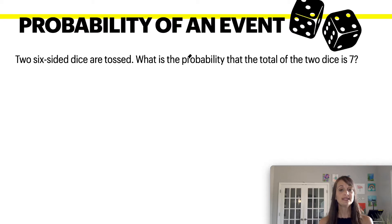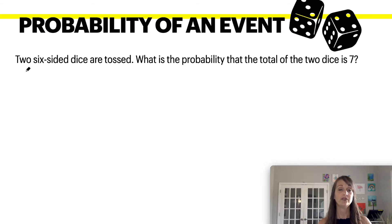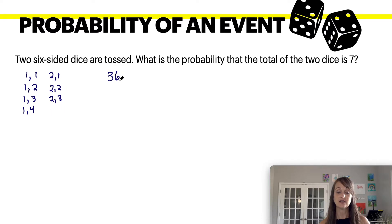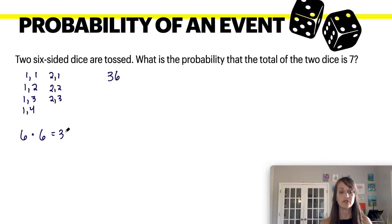Next example: you have two six-sided dice that are tossed. What's the probability that the total of the dice adds up to seven? When rolling two dice, you can have combinations like one and one, one and two, one and three, and so on. There are actually 36 different combinations total — six numbers on one die times six numbers on the other die equals 36 total combinations.